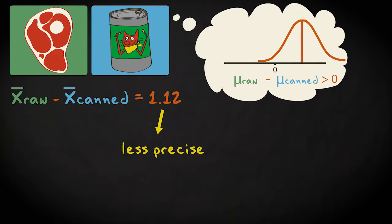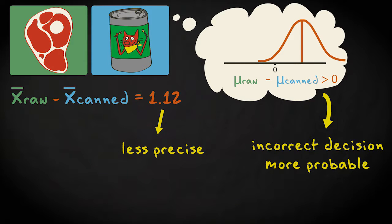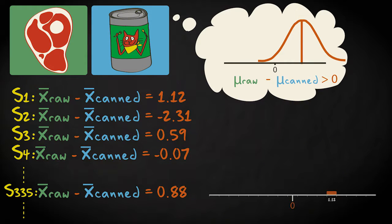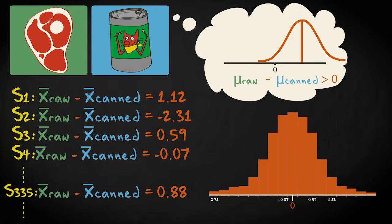If our sample statistic is less precise, our decision has a larger probability of being incorrect. We introduce probability by asking, if we were to sample indefinitely, what would the distribution of our sample statistic look like?